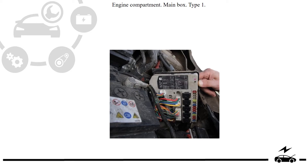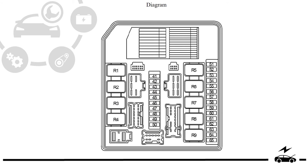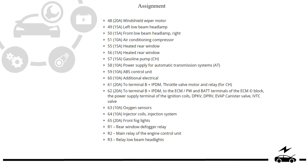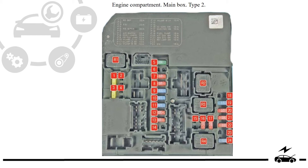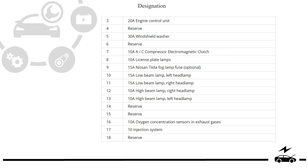Engine compartment fuse box. Type 1 — Diagram. Assignment. Type 2 — Diagram. Designation.